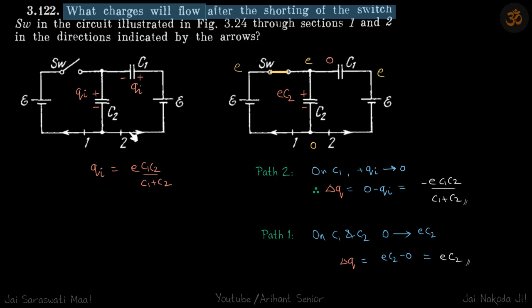We have found qi. Now let's find final charges. Once this switch is closed, you can see that both the batteries are e, which means if the potential here is zero, then potential here is e and here as well as e, which means across this capacitor the potential is the same, which means charge on the capacitor is going to be zero.